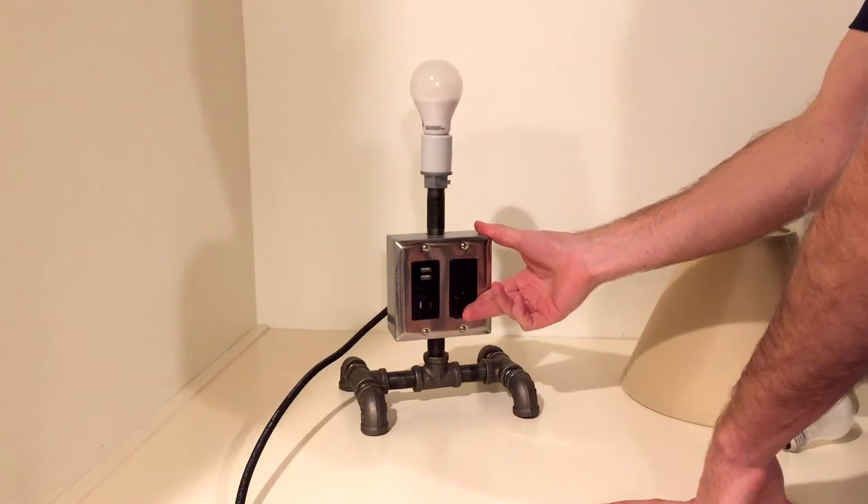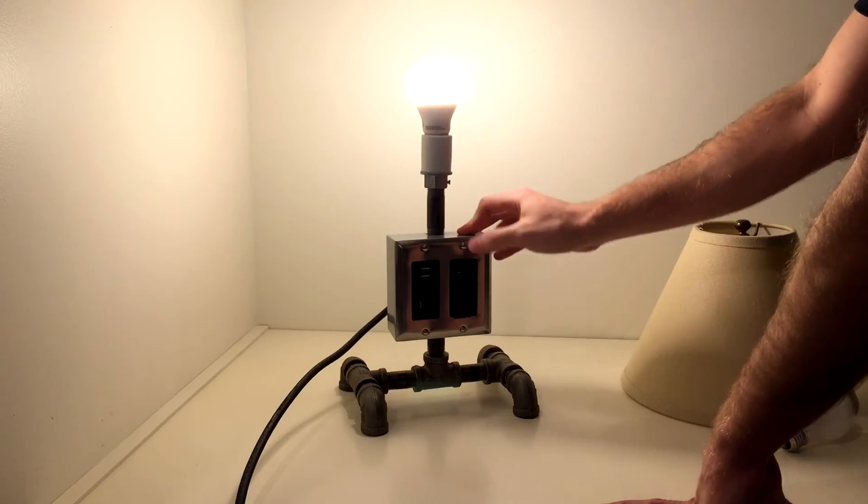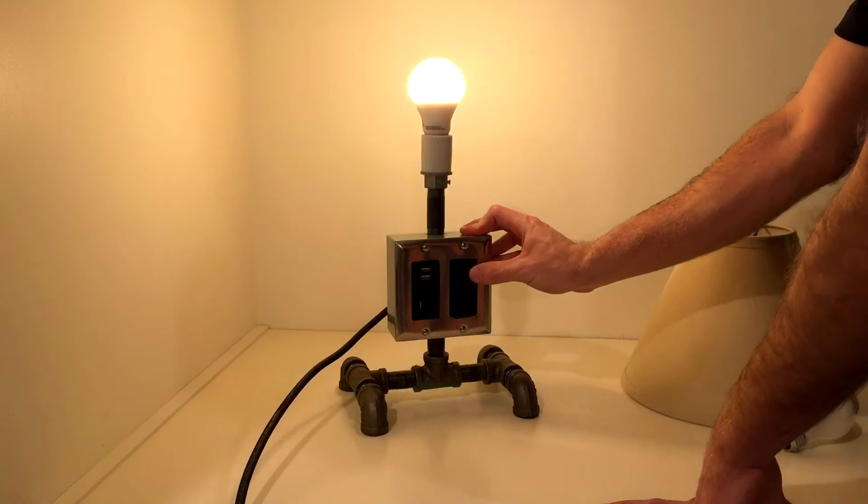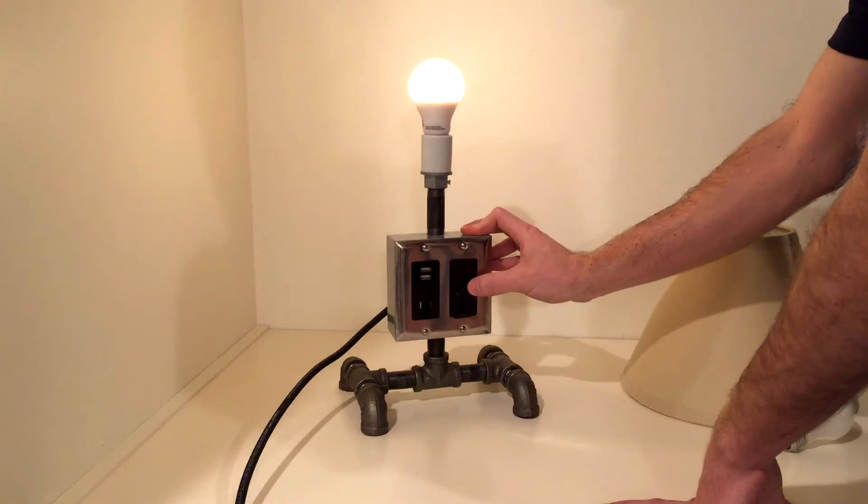And I don't know how well this is going to show up, but when you first turn it on at full brightness, it's at 2700K. And as you dim it, it gets warmer and warmer down to that 2200K.